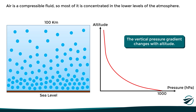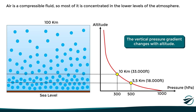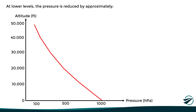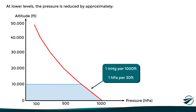For example, if we were to climb to an altitude of only 5.5 kilometers or 18,000 feet, the atmospheric pressure would drop by about half, reaching values of around 500 hectopascals. And if we continue climbing up to 10 kilometers or 33,000 feet, the pressure would be reduced to about one-third of that of sea level. At the lowest levels, typically below 10,000 feet, the rate is relatively constant — approximately 1 inch of mercury per 1,000 feet, or 1 hectopascal per 30 feet.